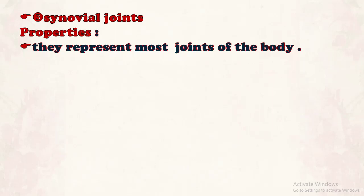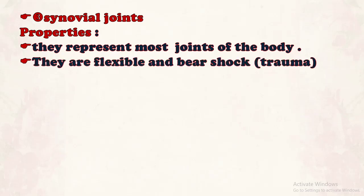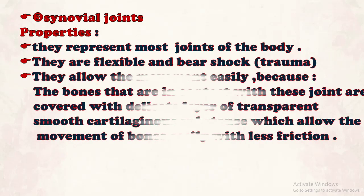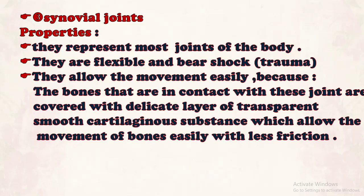Synovial joint: properties — they represent the most joints of the body, they are flexible and can bear stress or trauma, and they allow movement easily. This joint can move in a limited or wide direction because the bones connected at this joint are covered with a delicate, flexible layer of transparent smooth cartilaginous substance. This substance allows the movement of bones easily with less friction.